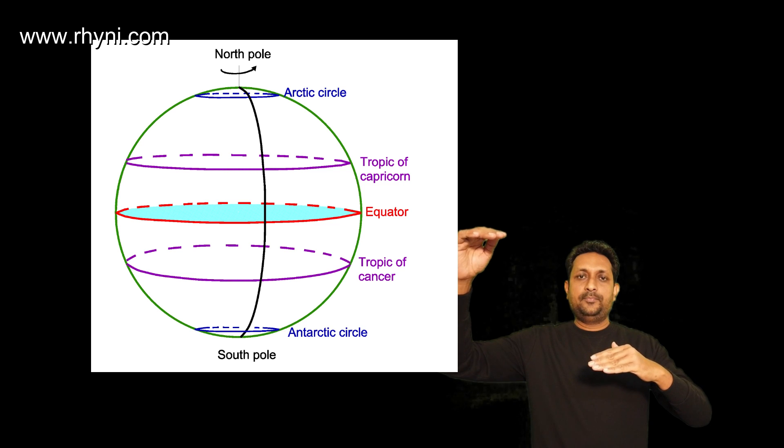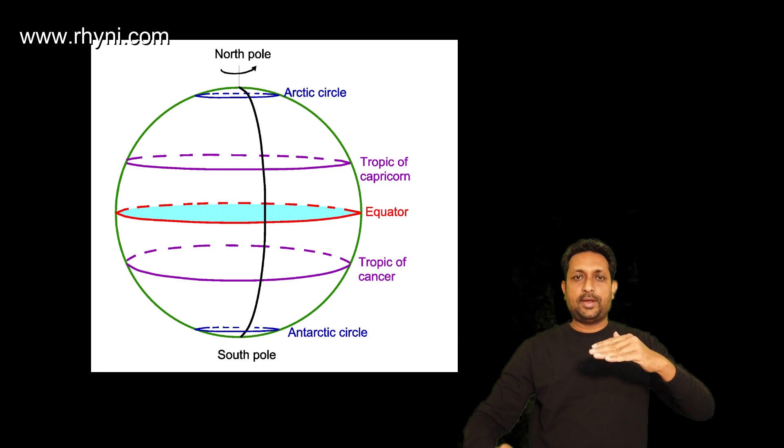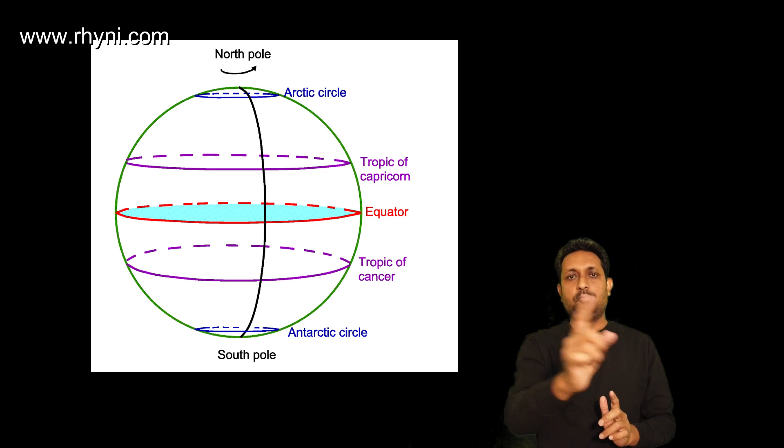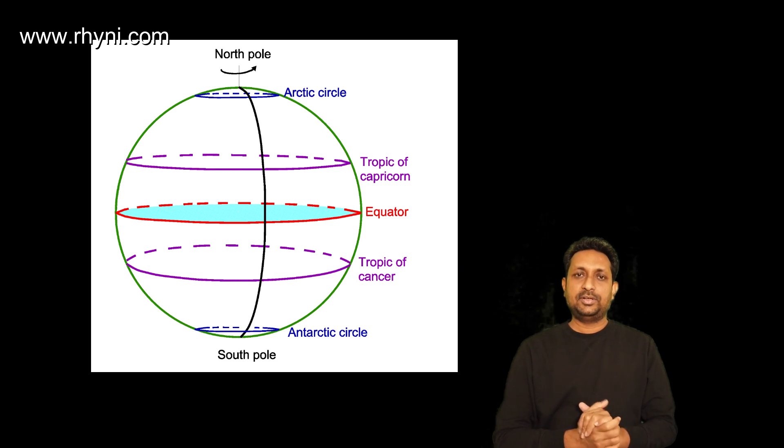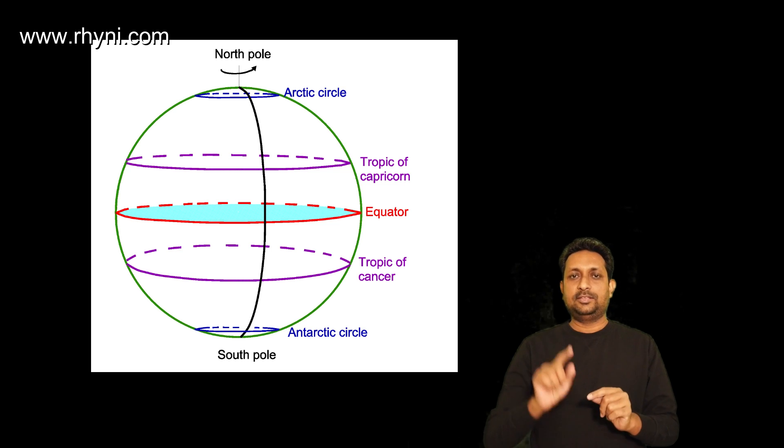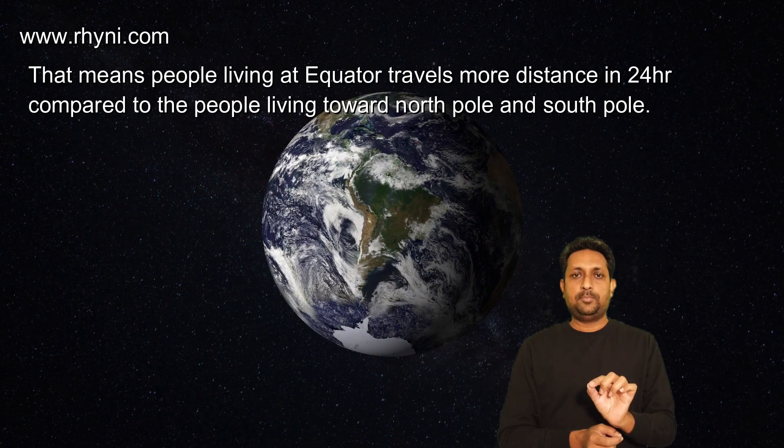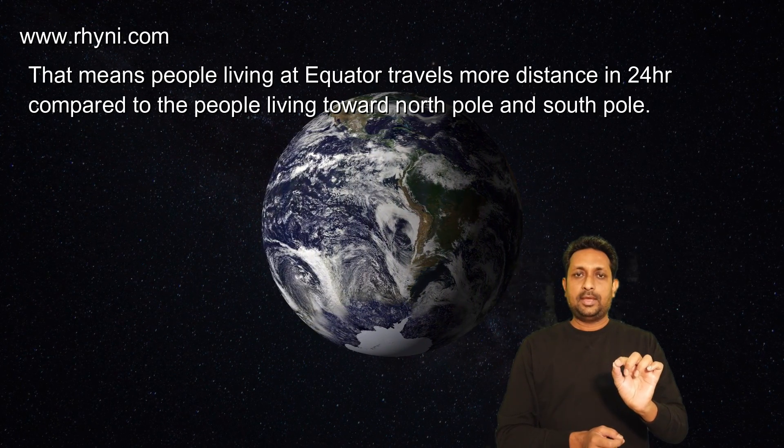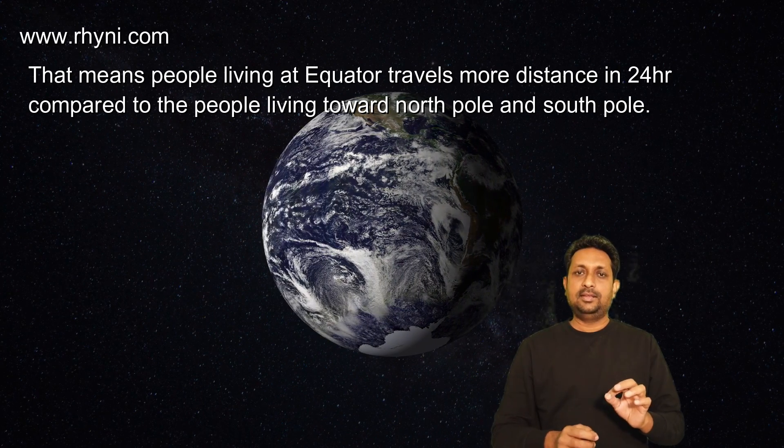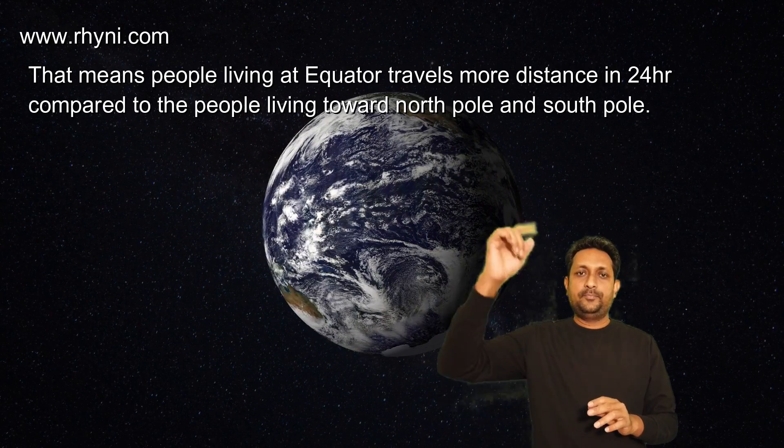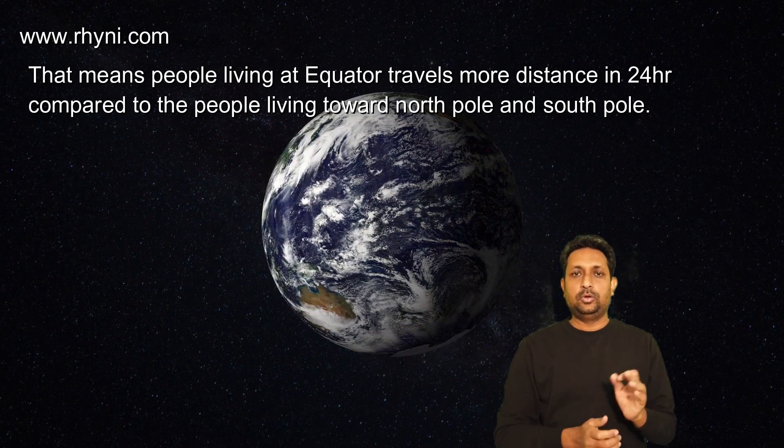Speed will be slower as we go upward or downward. Consider at the tropic of Capricorn and tropic of Cancer. At this distance, if you calculate the actual radius, the speed will be less because this radius is smaller. So the second answer is no, we are not all moving at the same speed. Things and people at the equator are moving faster than those living toward the north pole or south pole.